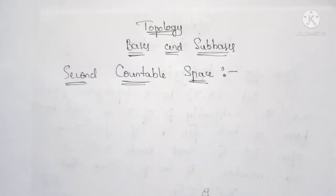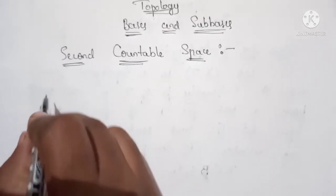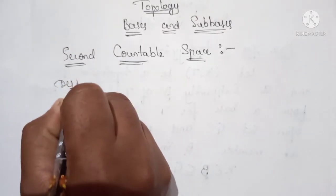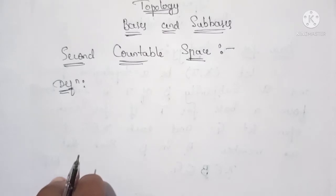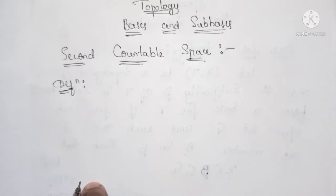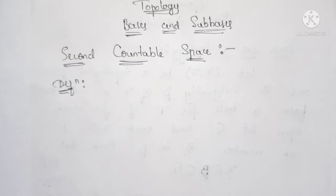Hello everyone, welcome back to my channel. In this video we are going to continue the basis and sub-basis. We have a definition: the second countable space. As we have first countable space based on the local base, similarly if we have a second countable space it is based on the basis — that is, if there exists a countable base for a topological space, then we say it is a second countable space.